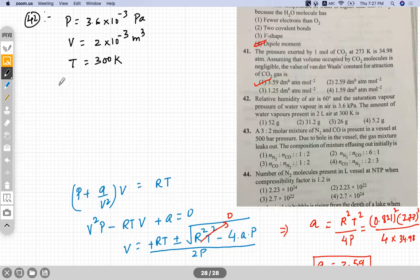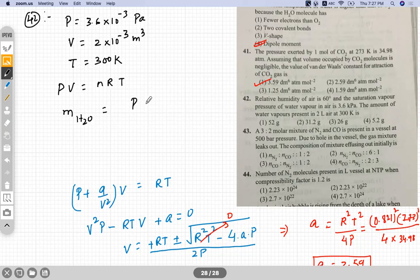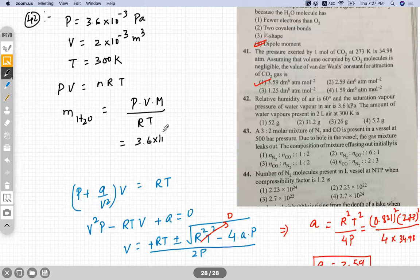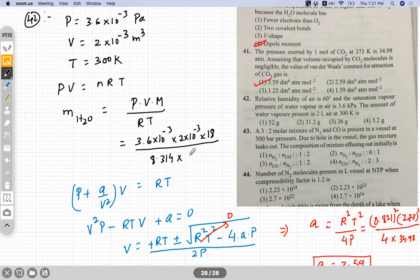We'll find out the mass of water from PV equals nRT. So mass of H2O would be P into V into molecular mass divided by R into T. So all the values we'll substitute: 3.6 times 10 to the power minus 3, 2 into 10 to the power minus 3 into 18, divided by 8.314 SI unit into 300.